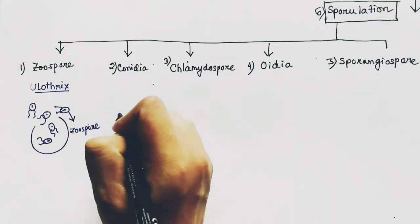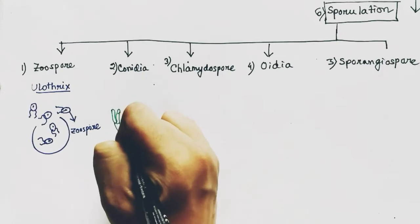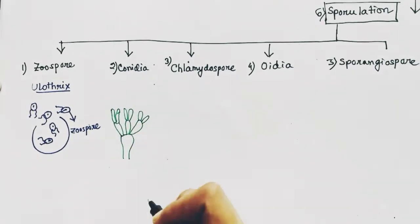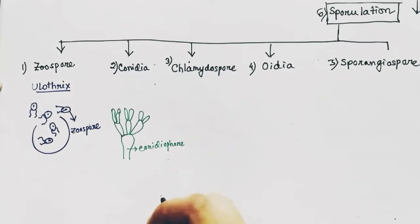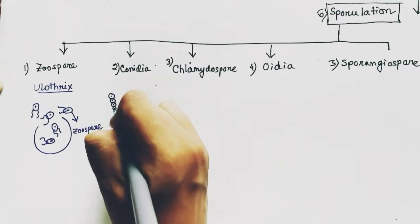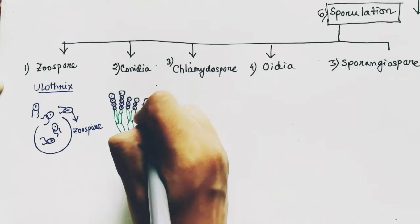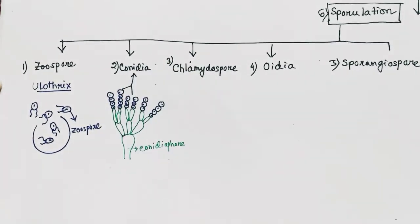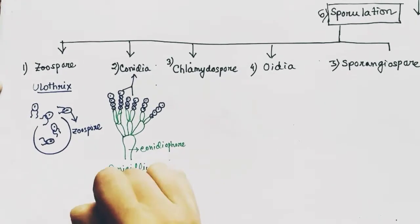Conidia spores are found mainly in Penicillium. There is an axis called the conidiophore which holds the spores. The conidia spores are arranged along this axis, and they are found in Penicillium.